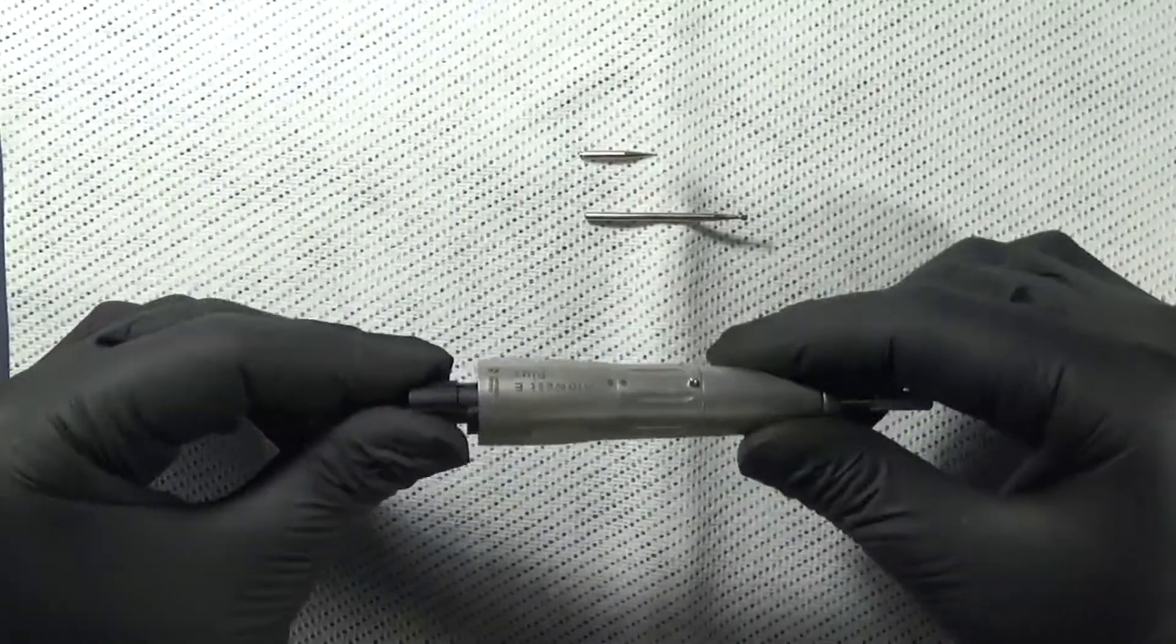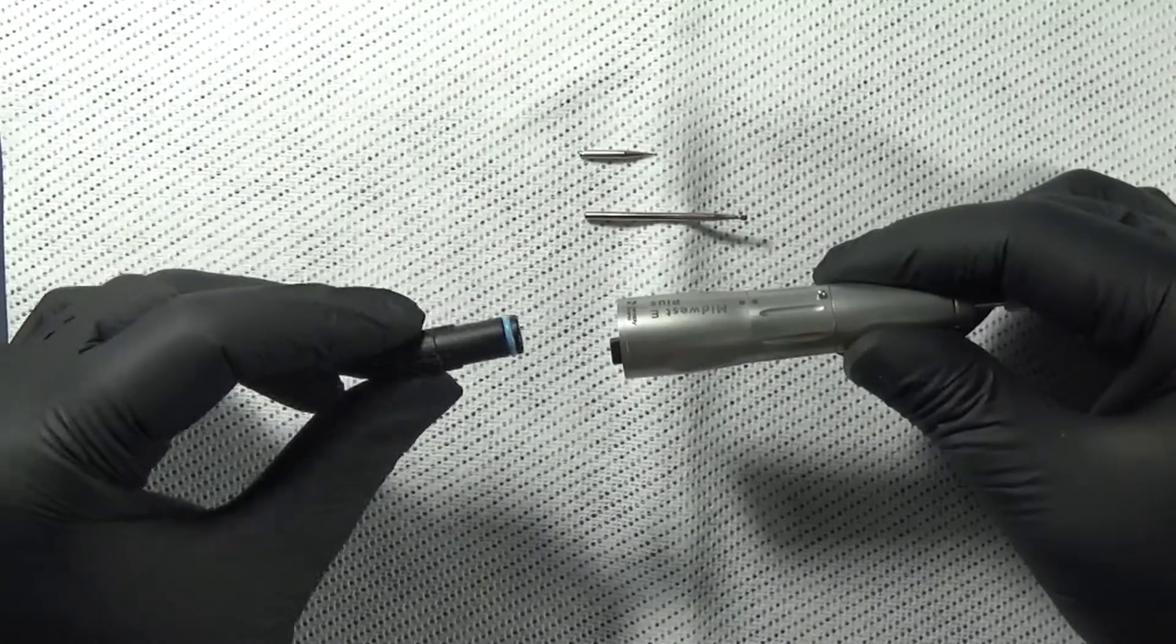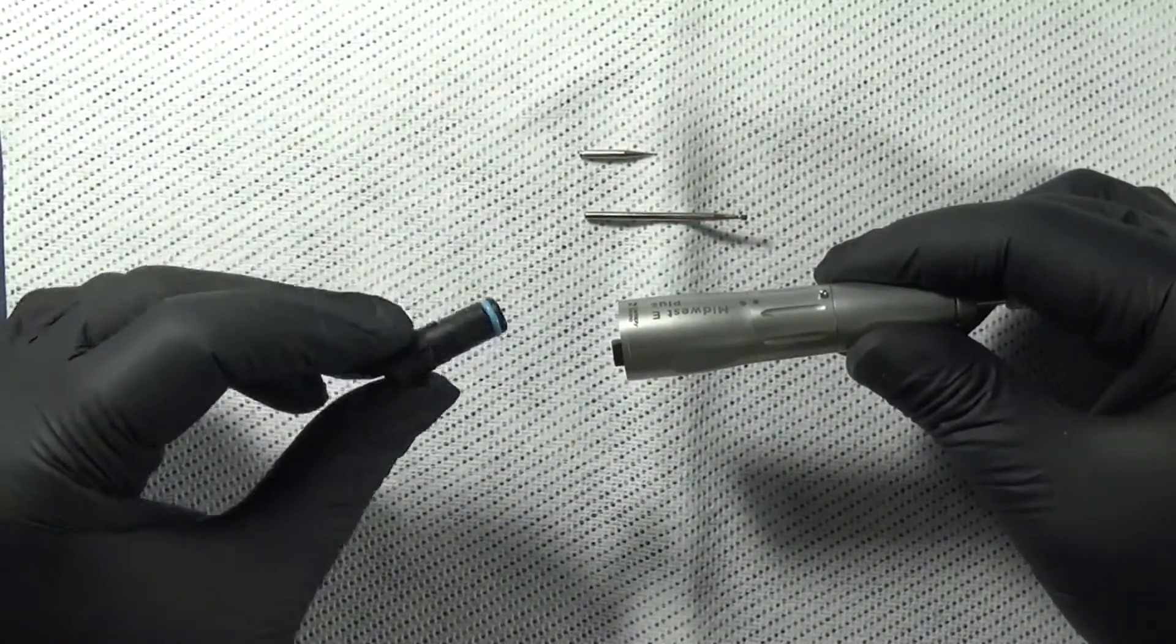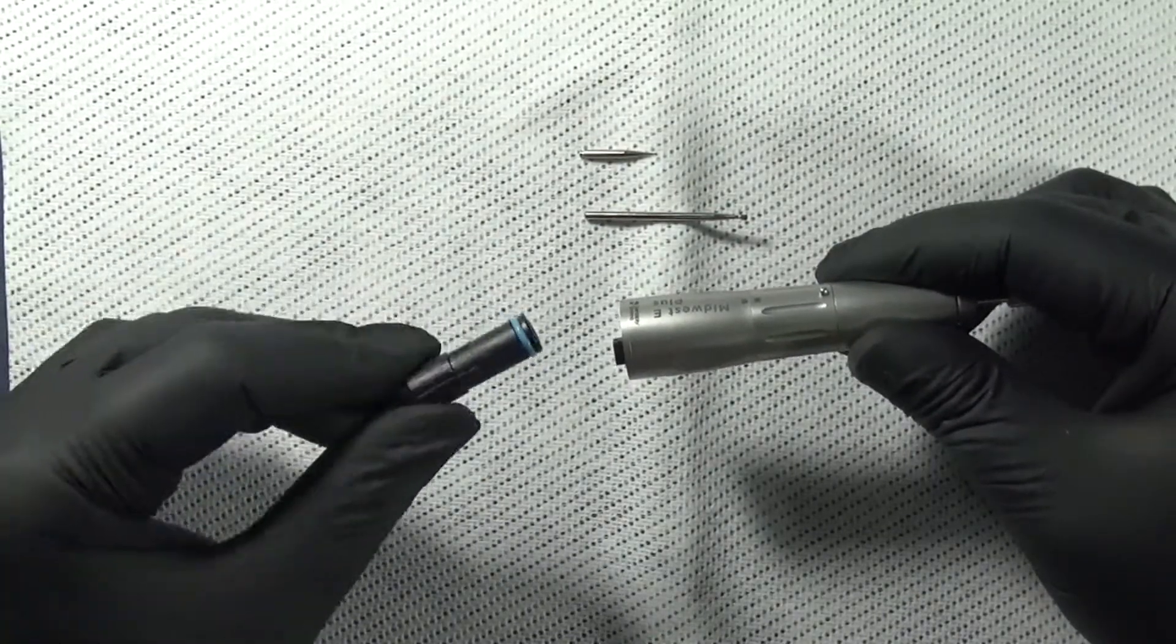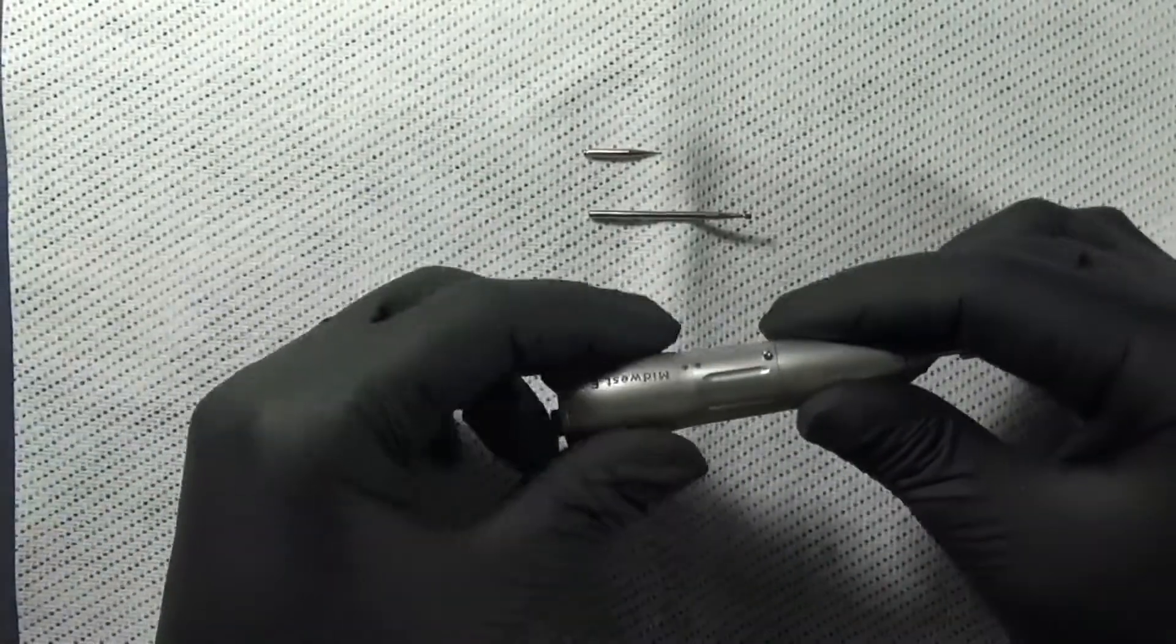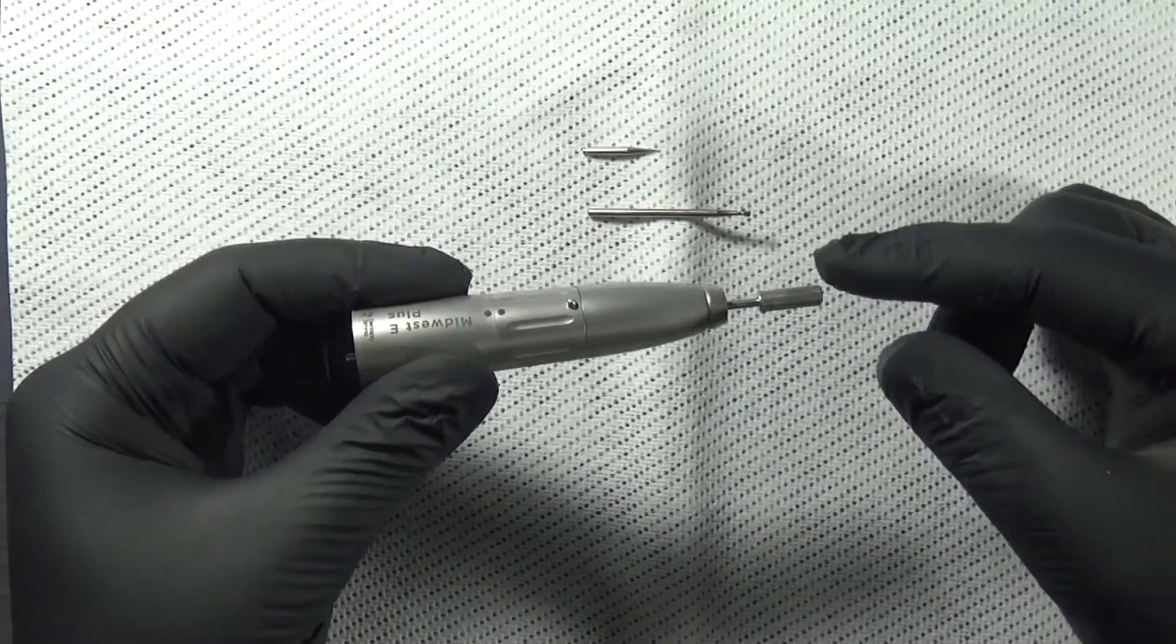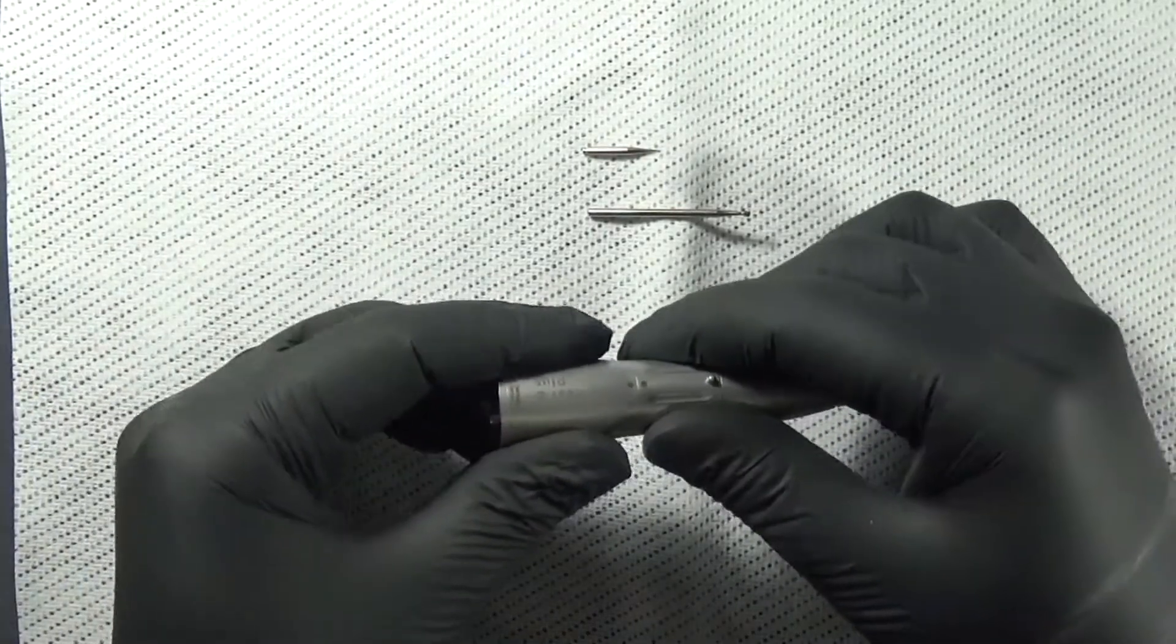When you receive it, it'll look like this with this little tool in one end. This black piece in the back end is for the manual maintenance of the attachment if you don't have an automated machine. We give you a nozzle for your spray can, so we can set this nozzle aside.